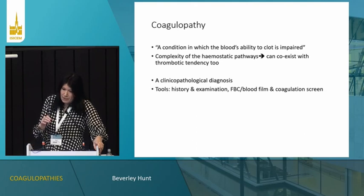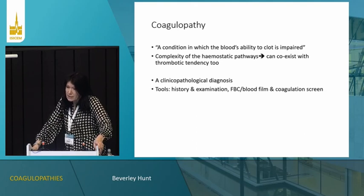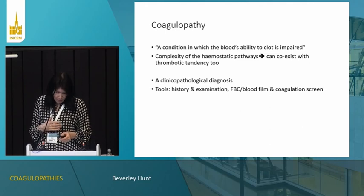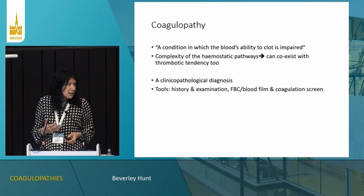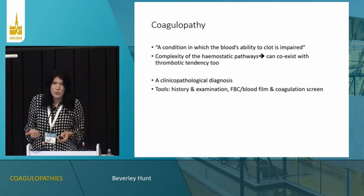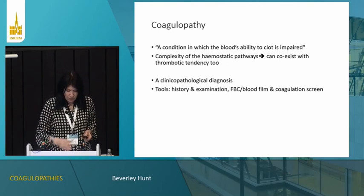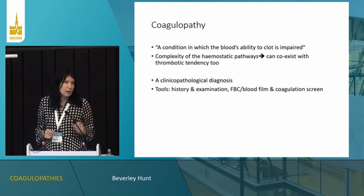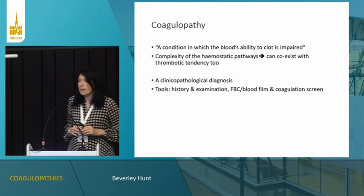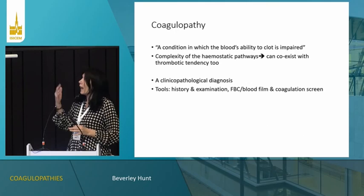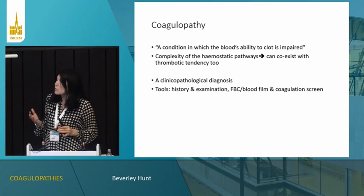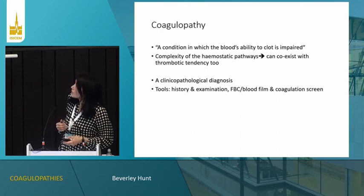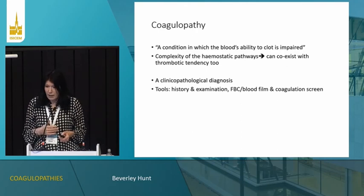So what is a coagulopathy? It's a condition in which the blood's ability to clot is impaired. We know haemostasis is highly complex and that we can have a condition where we have a tendency to bleeding, and we can also have a tendency to thrombosis — the classic one being disseminated intravascular coagulation. Whenever we look at coagulation, we should make a clinical-pathological diagnosis: you go and see the patient, look at their blood results, because many times you can have very similar changes with standard tests but a different diagnosis. Of course, you take a history and examine the patient.